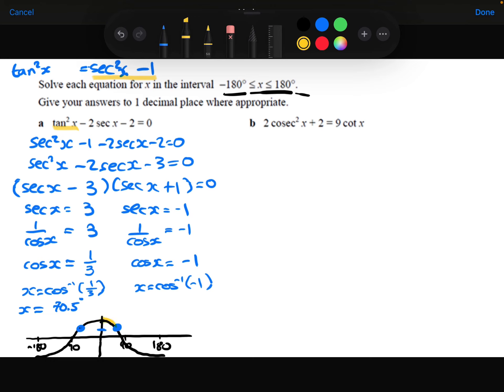I've just worked out that this was the 70.5, so this is going to be minus 70.5.